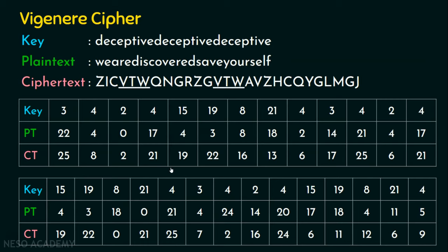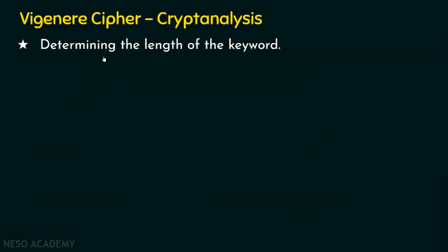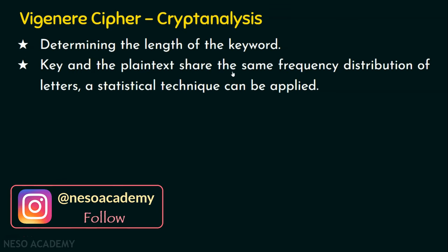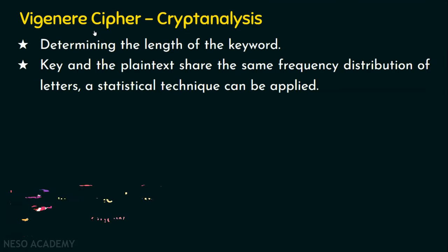Let's now see the cryptanalysis on the Vigenère cipher. The important thing is determining the length of the key, because the key is repeated and determining its length is a very important aspect of cryptanalysis. The second point is that the key and the plaintext letter share the same frequency distribution — meaning a statistical technique can be applied, since English letter frequency distributions are shared between the key and plaintext.